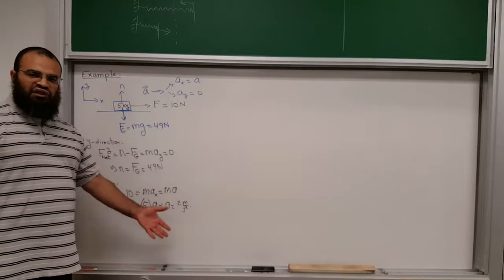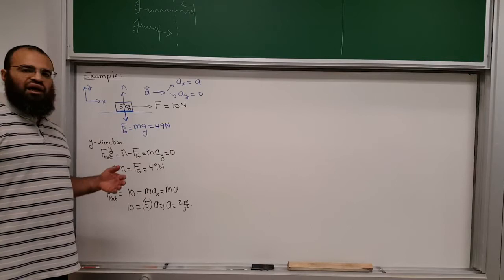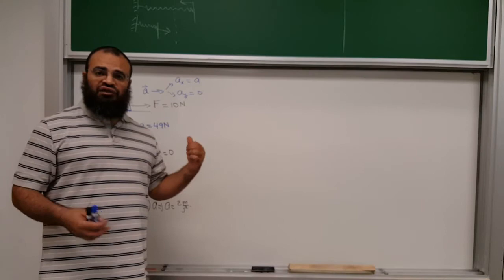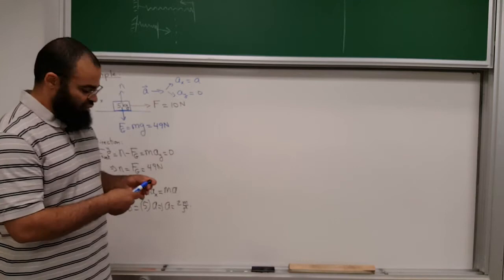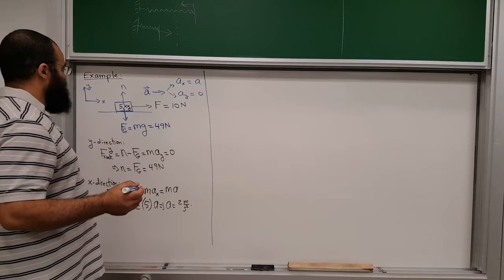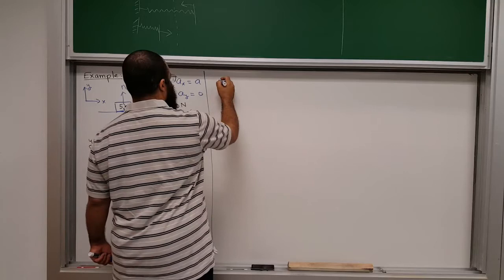Now that you know the acceleration, you can use kinematics to figure out the velocity after some time, knowing the initial velocity is zero, and find the position afterwards. Let's do another example — the inclined plane — and then we'll consider friction later.